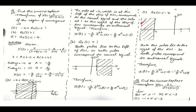For case (c), Re(s) < -4: the ROC lies to the left of -4, which is also to the left of +1. In both cases the system is anti-causal, so we use x(t) = -e^(-at)·u(-t). Putting in the values: x(t) = (2/5)·e^(-4t)·u(-t) - (2/5)·e^(t)·u(-t).